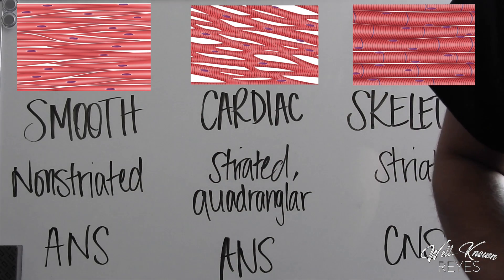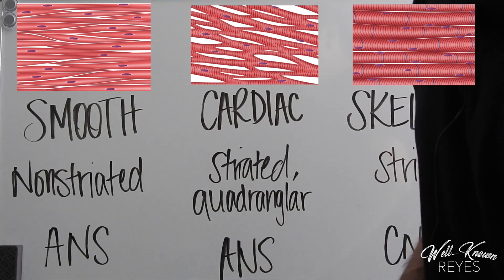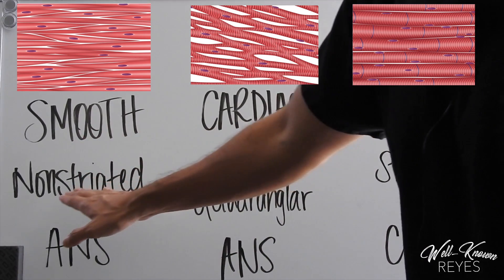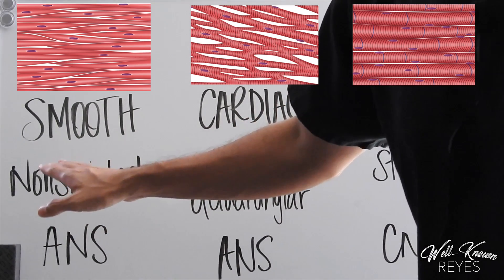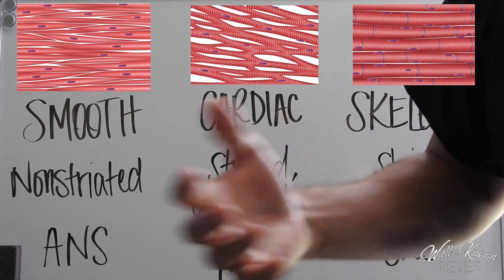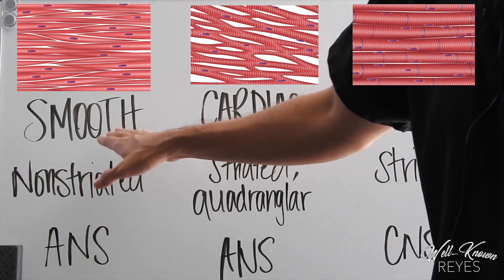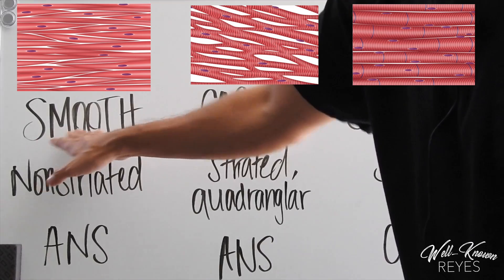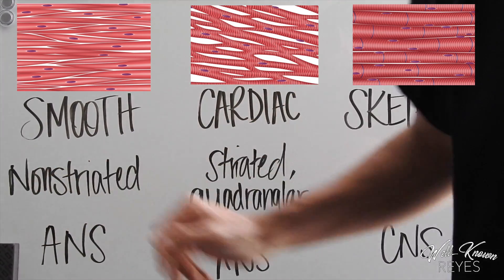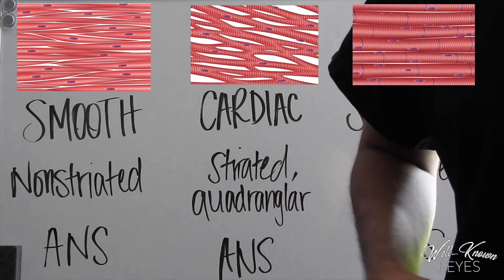We'll begin with smooth muscle tissue. Smooth muscle tissue is non-striated—striation means it appears striped underneath a microscope. So it is non-striated, which means it appears smooth. That should be easy to remember: smooth, non-striated, not striped. It can be found in the walls of the stomach, the intestines, and the blood vessels.